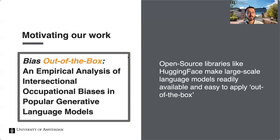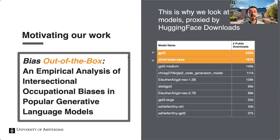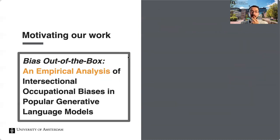The title has important elements: 'out of the box' — open source libraries like Hugging Face make large-scale language models readily available, but not all practitioners carefully select which models they use. Making these models readily available is great for research but means they will in some scenarios be applied directly out of the box. This is why we focus on popular models as proxied by Hugging Face downloads — in the main paper we analyzed GPT-2 and confirmed similar results for XLNet, the second most downloaded model.